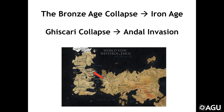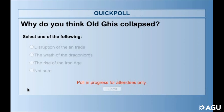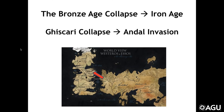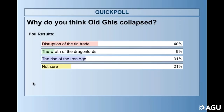So let me check if I'm being convincing — time for another poll. Why do you think Old Gis collapsed? The disruption of the Tin Trade? The wrath of the Dragon Lords? The rise of the Iron Age? Or are you not sure? Results: 40% think it was the disruption of the Tin Trade, 31% think it was the rise of the Iron Age, and only 9% think Dragon Lords played a major role. So I'm being a little more convincing.